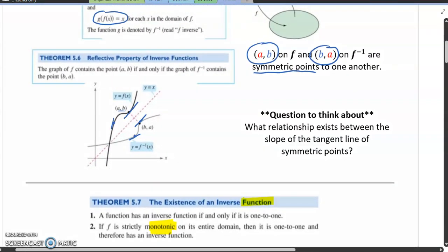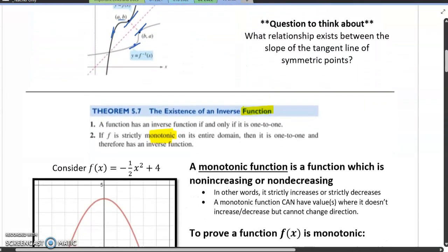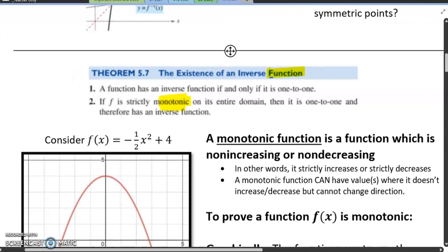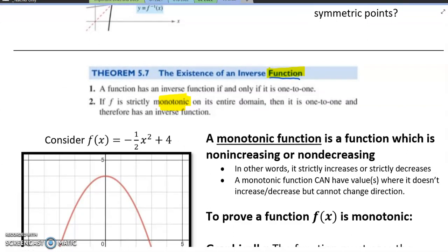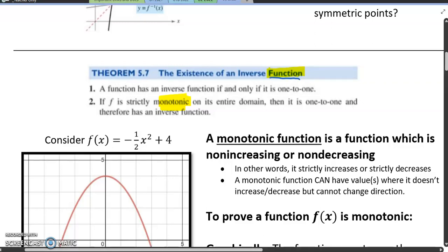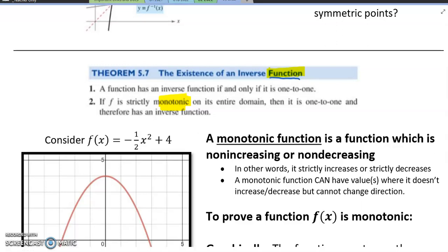So before we actually get into finding derivatives of inverses, there's one other thing we need to know about, and that is the existence of an inverse function. Notice that I'm calling these functions and not equations. And so functions, remember, have some special qualities. Essentially, they need to pass the vertical line test. That is, every x must have only one unique y value. So in order for an inverse function to exist, we have to say that the inverse will be a one-to-one function. And another way for us to look at this from a calculus standpoint is that if f is strictly monotonic on its entire domain, therefore it must be one-to-one, and then it has an inverse. So in order to show that an inverse function does exist, we're going to have to show that the function is monotonic.